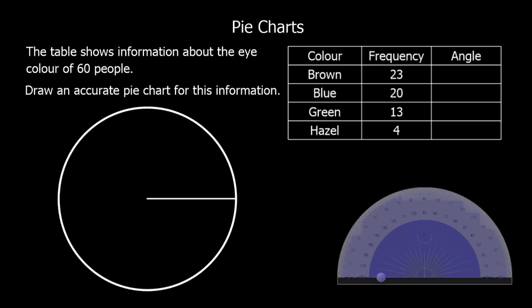Here we've got another question. If you want to pause the video and try and do this yourselves, you can. Otherwise, just keep watching. The question says the table shows information about the eye colour of 60 people. Draw an accurate pie chart for this information. So again, we've got 60 people. We'll add a total row in the bottom here. We've got 60 people in total.